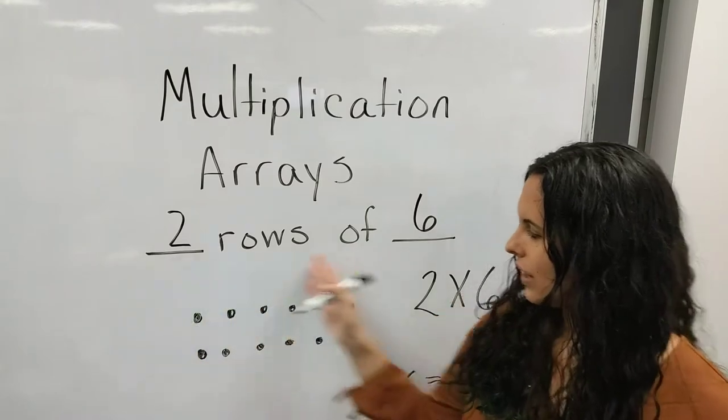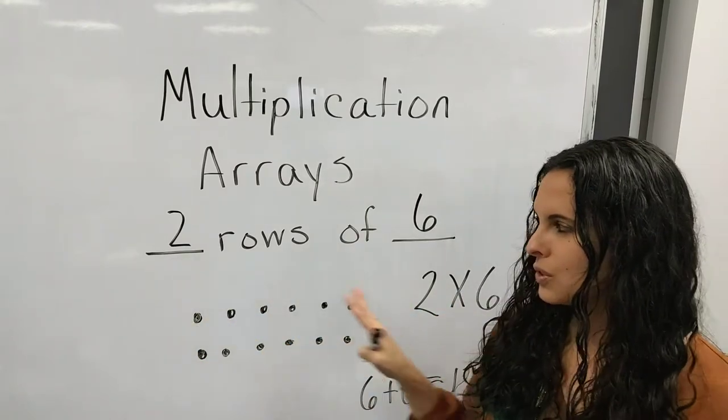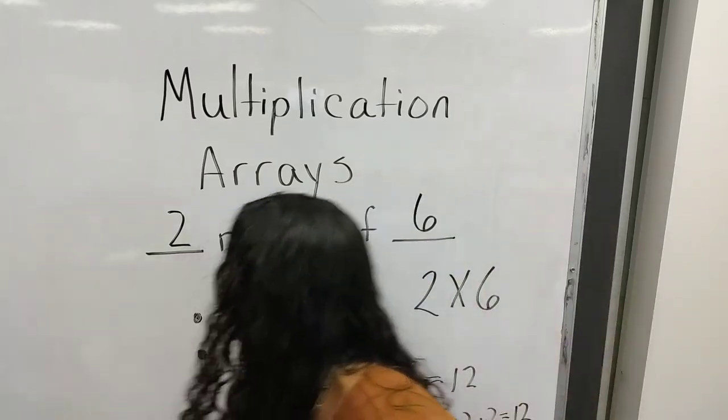So you can do lots of things with the array. Your array builds your multiplication fact in rows and columns. Let's do another example.